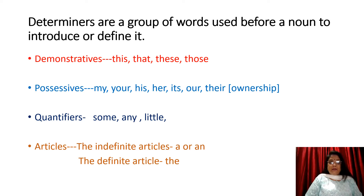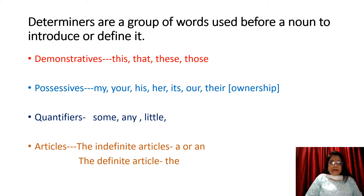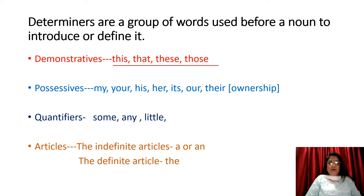The first type is demonstrative. Demonstrative means words like this, that, these, those. These are all called demonstrators — they demonstrate and they point out something.